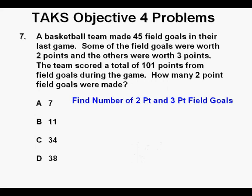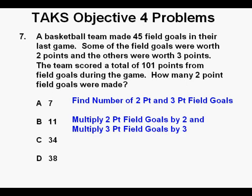There are a lot of ways to do this problem. We can take the number of 2 point and 3 point field goals from each answer. Then we can take the number of 2 point field goals and multiply them by 2, and the number of 3 point field goals and multiply them by 3. And finally we can add the number of points together to see which answer gives us 101 points.